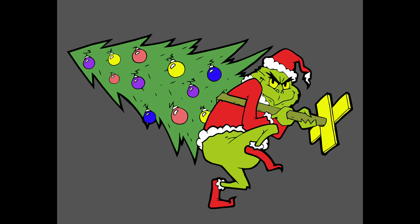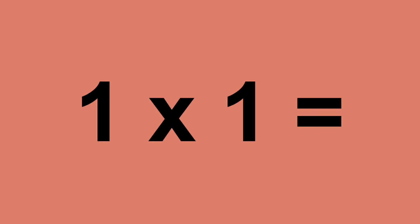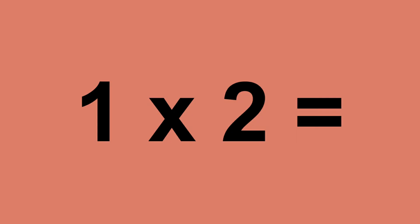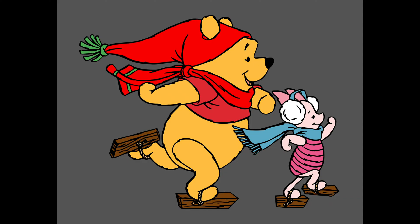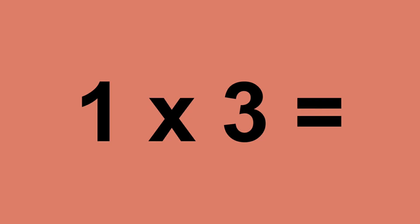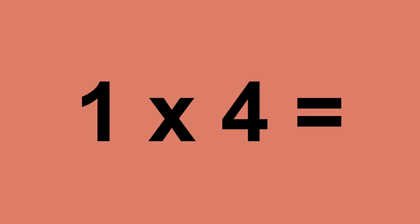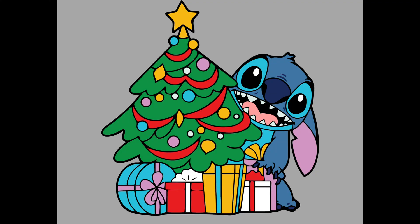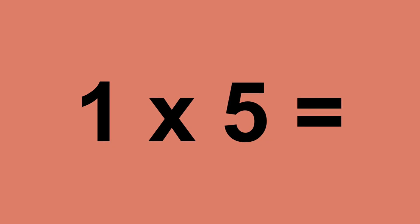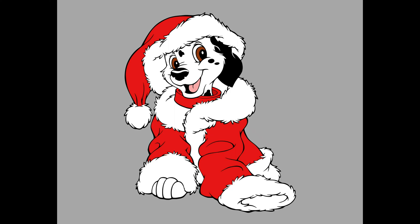One times zero equals zero. One times one equals one. One times two equals two. One times three equals three. One times four equals four. One times five equals five. One times six equals six.